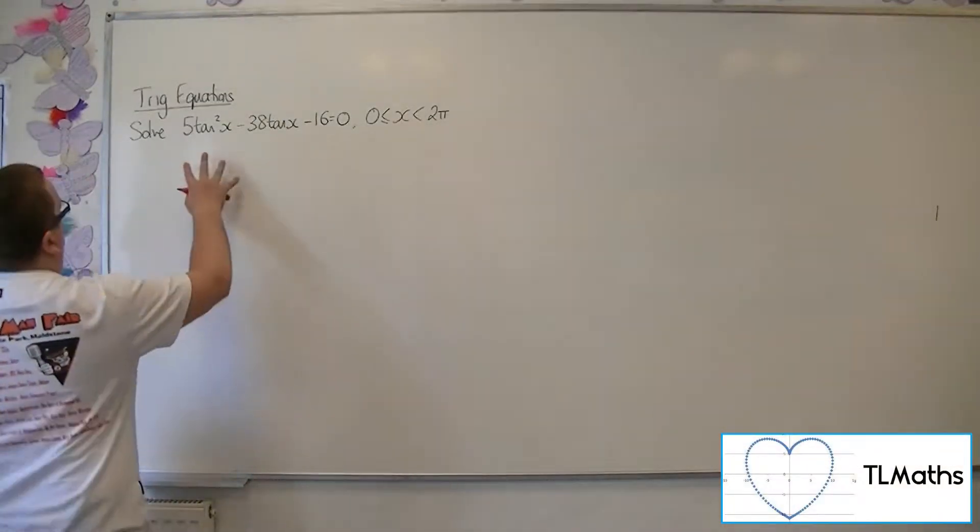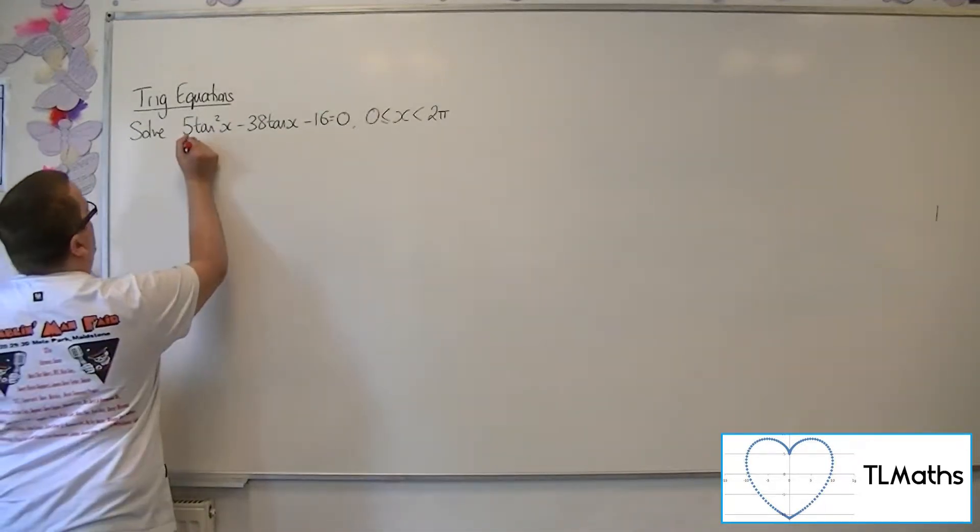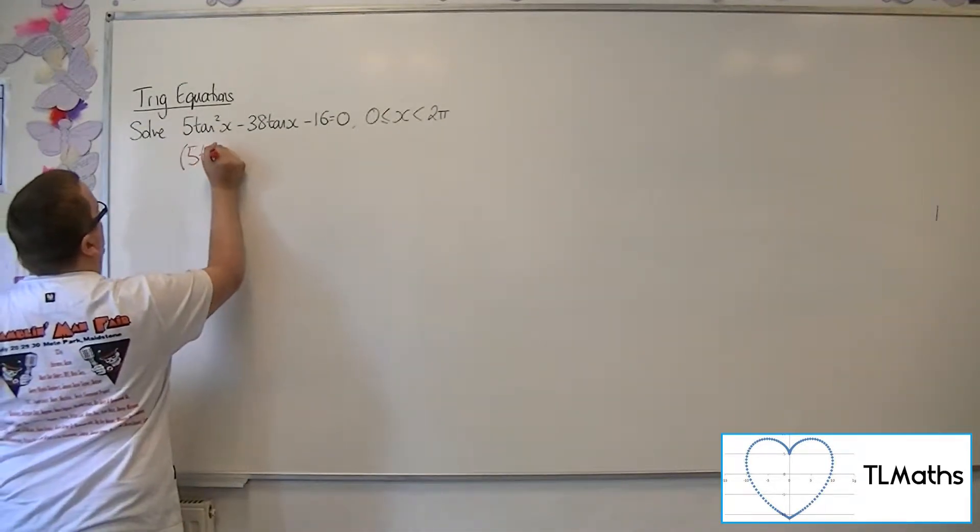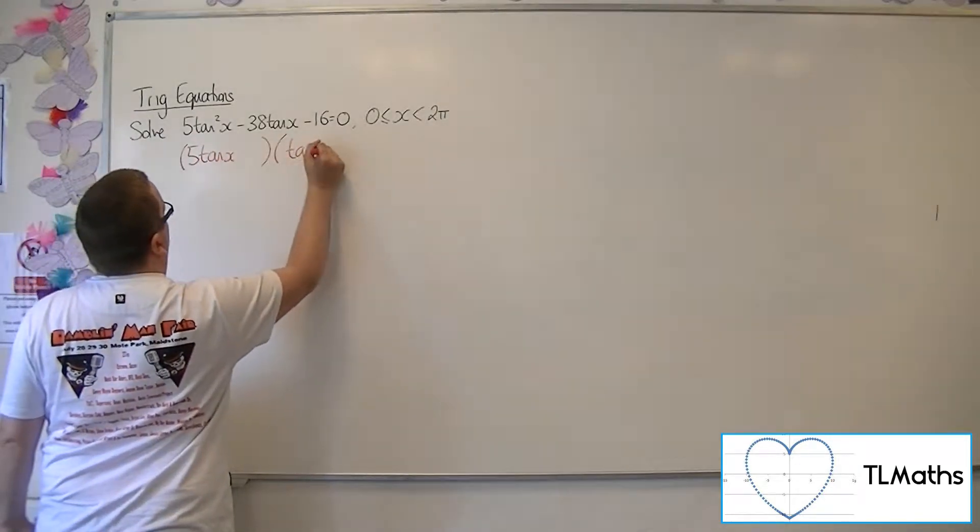Now this is a quadratic in tan that we can factorise. So this factorises to 5 tan x and tan x in that bracket.